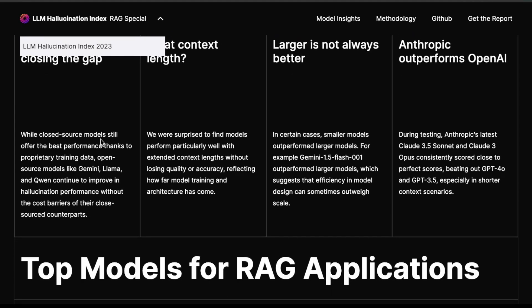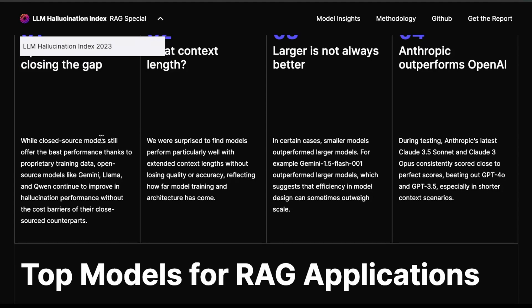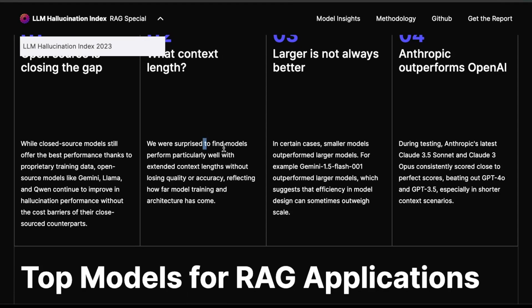We care about performance, but we might also care about efficiency. They were surprised to find models that perform particularly well with extended context lengths without losing quality or accuracy, which reflects how far model training and architecture has come. A few months back, when folks were trying to extend the context windows of large language models, they could be successfully extended, but that didn't guarantee performance. Apparently these models are becoming a lot better at understanding information and context, so with that extended context length also comes effectiveness and performance accuracy.